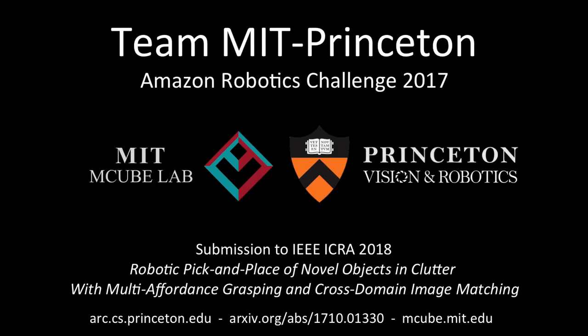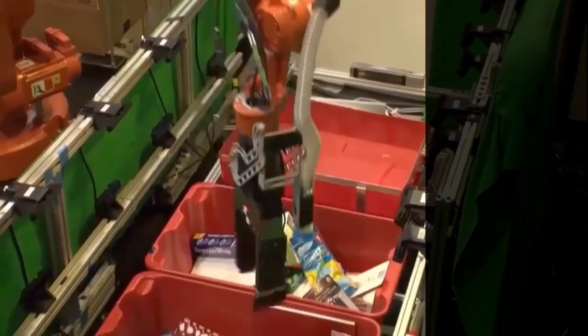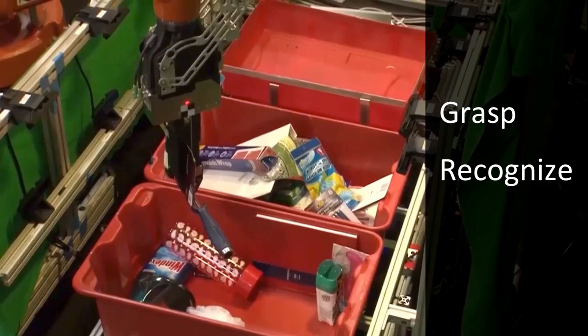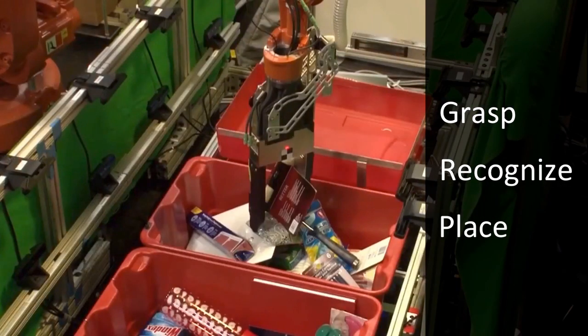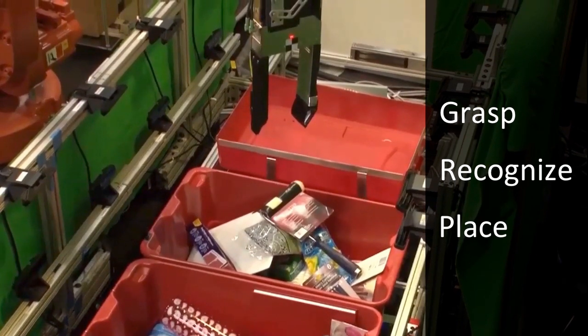This is a summary of the main technical contributions of Team MIT Princeton in the 2017 Amazon Robotics Challenge. The goal of this work is to demonstrate that it's possible and practical to grasp, recognize, and place a wide variety of novel objects in clutter using very little prior information, which in our case is a set of product images.